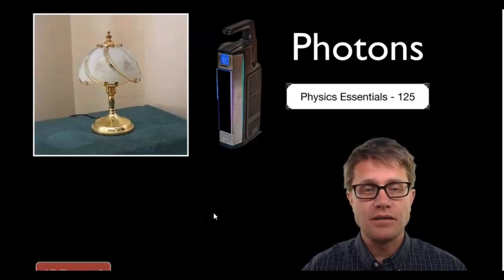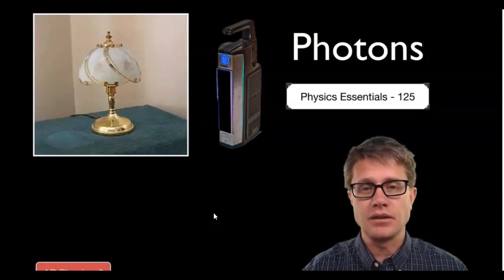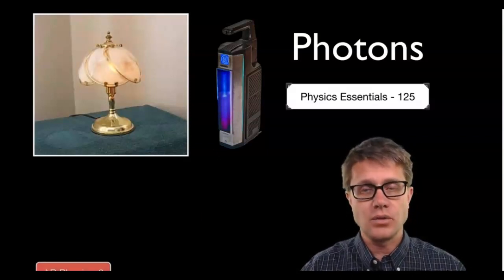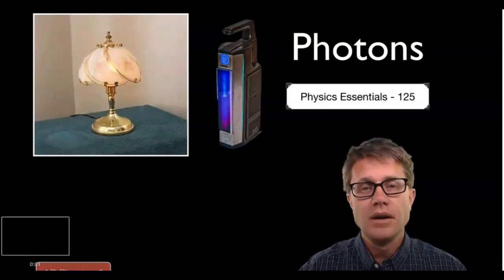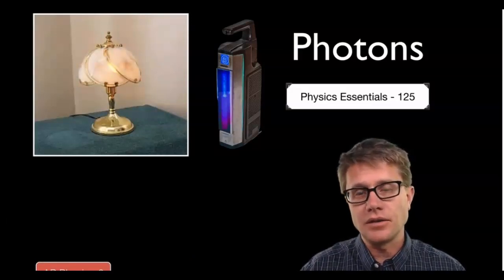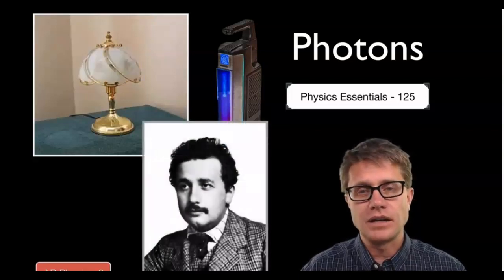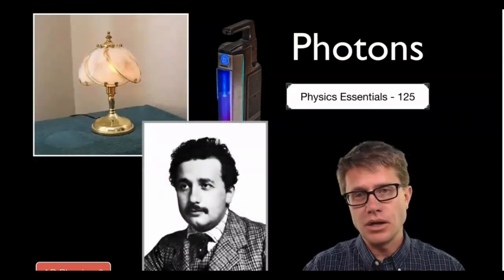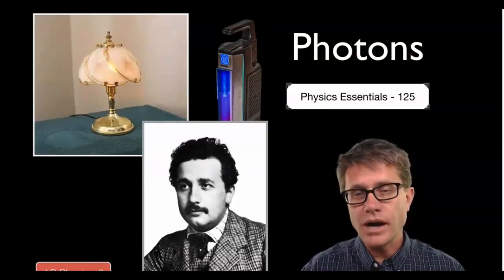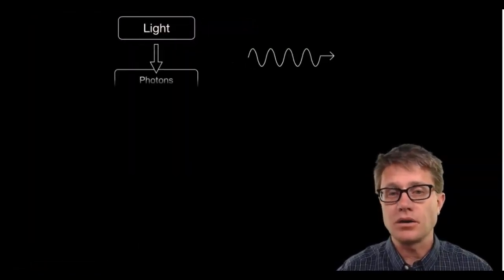I got an email from somebody and they said they have a touch light in their house — you can touch it with your finger and it goes through different cycles, but they could hit it with a UV light and it would cycle through as well. Well, this is the photoelectric effect — you're kicking off electrons with that light. It was really explained by Albert Einstein in 1905. Scientists knew that if you hit UV light on metal it would kick off these little sparks.